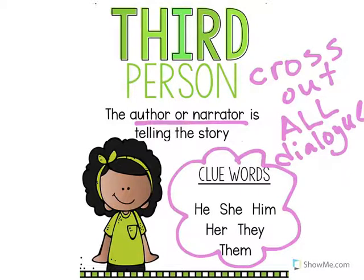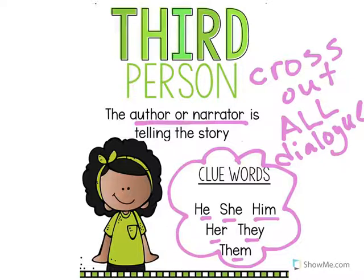Some of the third person clue words are: he, she, him, her, they, and them. A lot of people also like to say that character names would be good keywords. But you have to remember — character names are also in stories written in first person. So I would try to avoid using character names as proof for third person, just because they appear in all types of books. Stick to these pronoun clue words to really make your proof stronger.